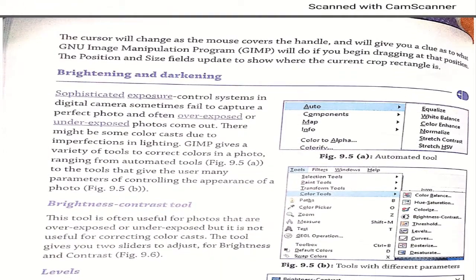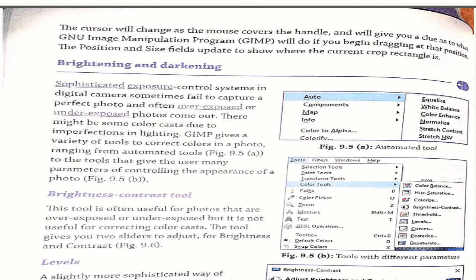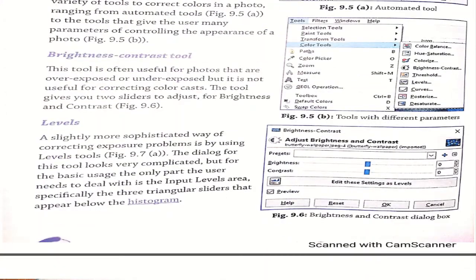Next is brightening and darkening. You can brighten or darken your image depending on its appearance. There are many types of contrast tools available to set the darkness or brightness of your image. The brightness/contrast tool is often useful for photos that are overexposed or underexposed, but it's not useful for correcting color cast. It gives you two sliders to adjust brightness and contrast. You can choose the tool, adjust accordingly, and press OK.